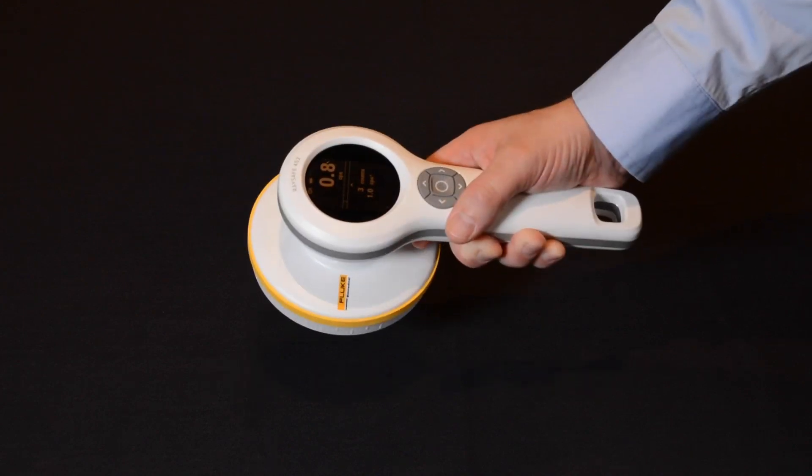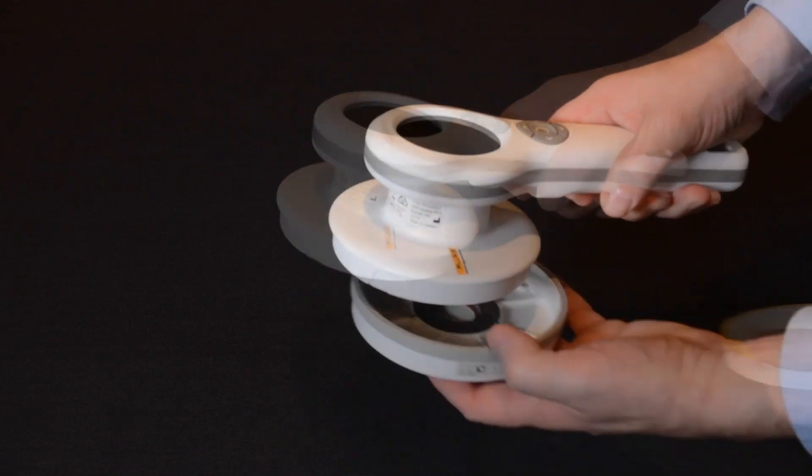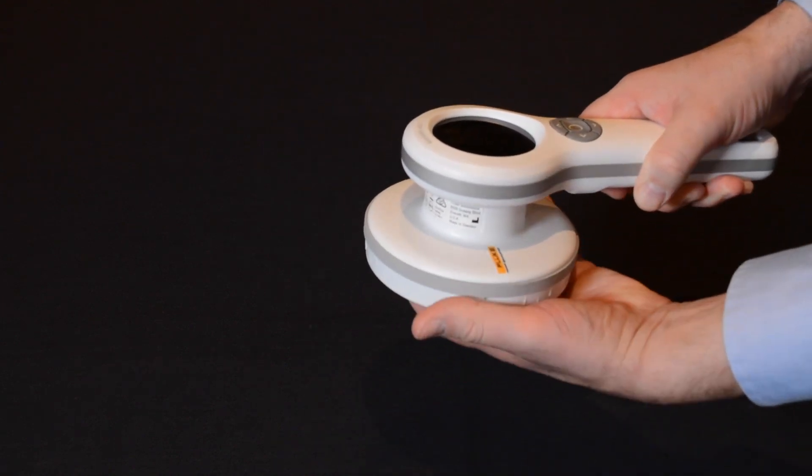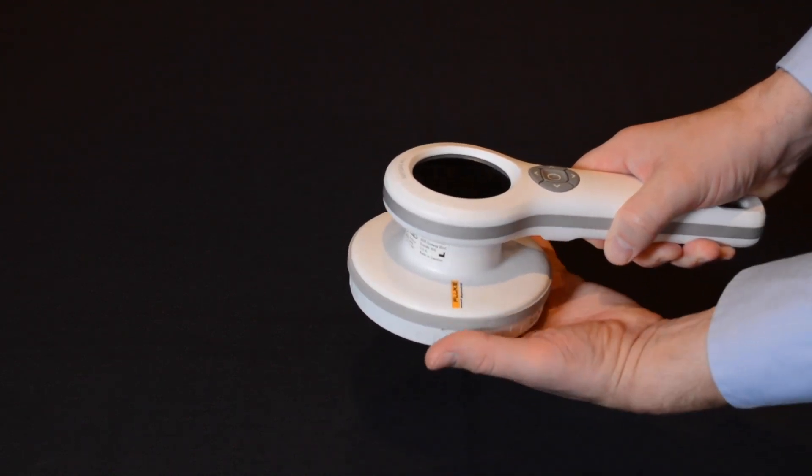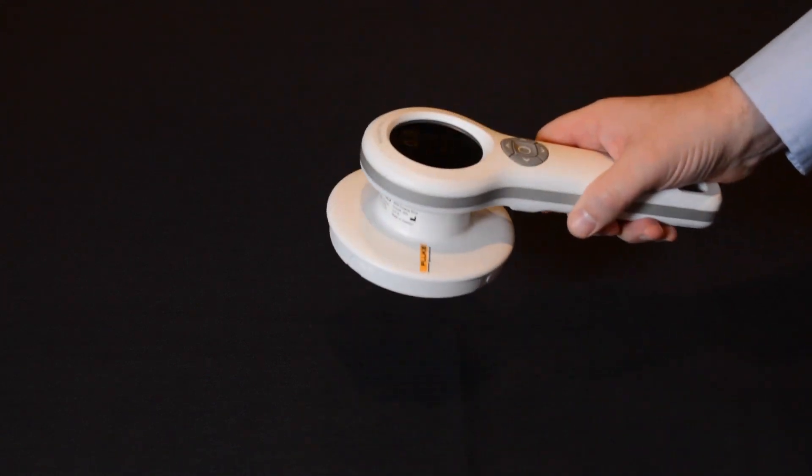You can measure ambient dose equivalent definition with this yellow lid, or you can replace it with a gray lid that measures air kerma. Or you can take off the lid and measure counts, as well as beta and gamma radiation and higher energies of alphas.